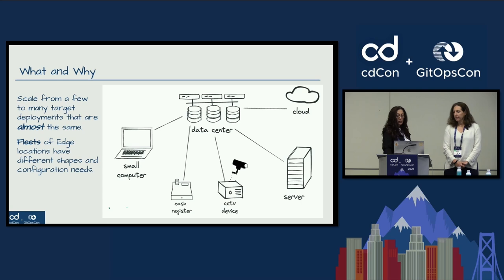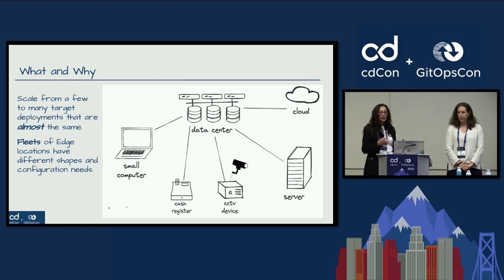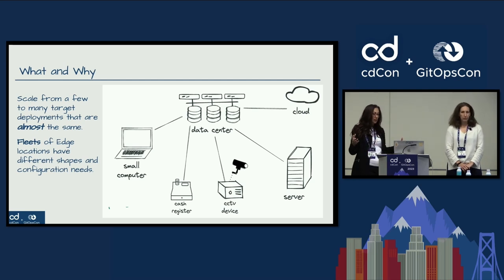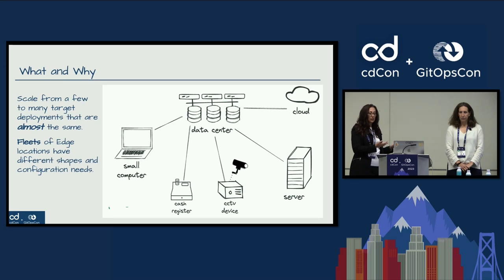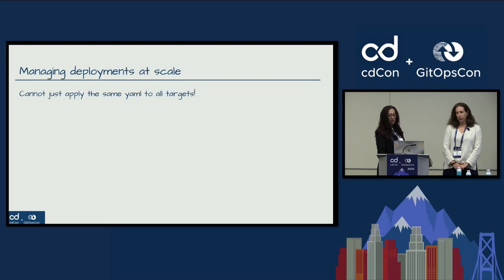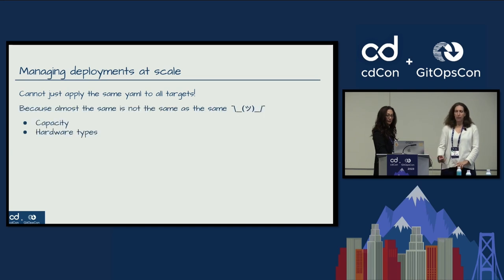We're in a scenario where we have a lot of different locations where we want to deploy our software, and they are really different - some in the cloud, some are edge locations with one server, some are bigger. Even those with one server, or different distribution centers, can have different types of hardware. So you can't just take the same YAML that you created for one deployment and apply it to every location. There are things like capacity and hardware types, so certain configuration values might be different.